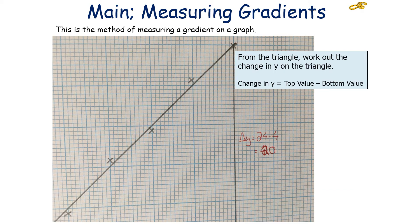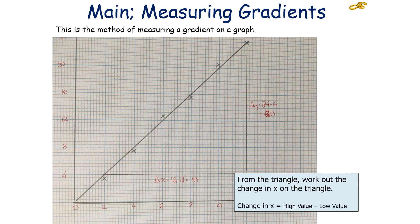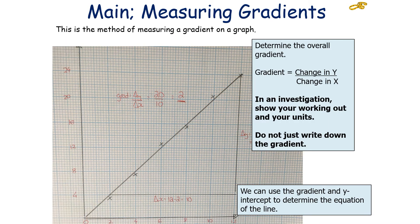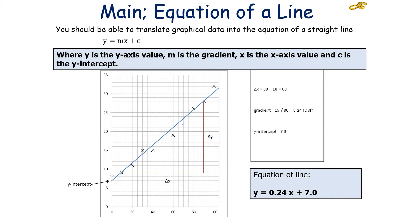When measuring the gradient from the gradient triangle you've drawn, work out your change in y by doing the top value minus the bottom value. For the change in x, do the high value of x minus the low value of x. That gives you a value for change in y and change in x. Then the gradient is equal to the change in y divided by the change in x. In any investigation, you must show your working and the units of your gradient. You can use the gradient and the y-intercept of your line of best fit to determine the equation of the line, and translate graphical data into the equation of a straight line when the line of best fit is straight.